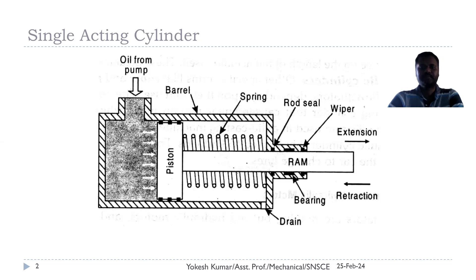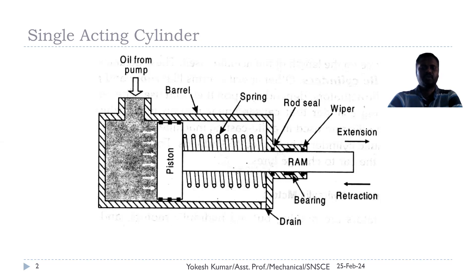The piston is connected with the ram, which makes linear extension and retraction motion. On the other side of the barrel, we have a spring mechanism, and retraction is ensured with the help of this spring. The left-hand side of the piston is the blank end and the right-hand side is the rod end. The ram reciprocates with the help of rod seals and wiper seals. Bearings are also present. The purpose of the rod seal is to avoid leakage of oil from inside the cylinder to outside, and the bearings are used to reduce friction.